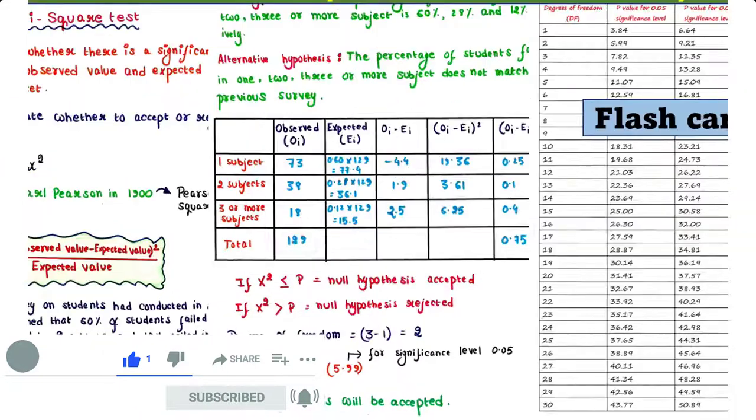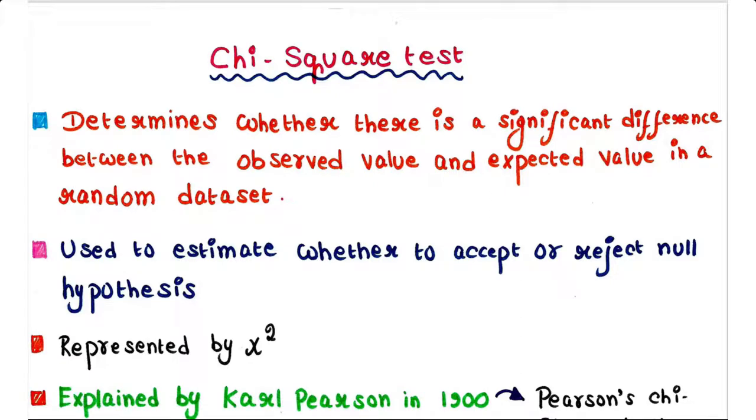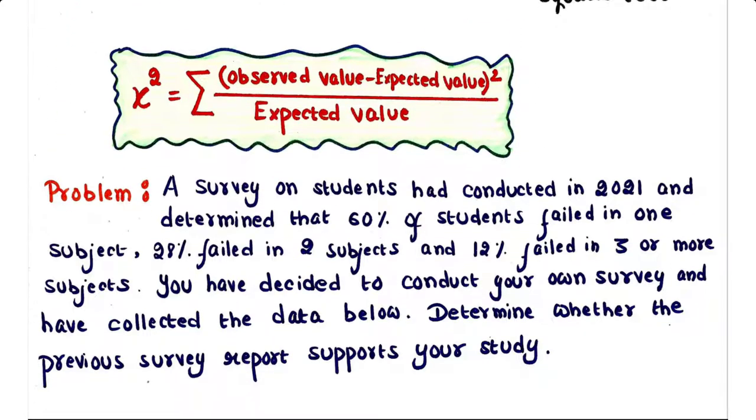Before defining chi-square test, we will see an example first. Suppose a survey was conducted on some students in 2021 and determined that 60% of students failed in one subject, 28% failed in two subjects, and 12% failed in three or more subjects.